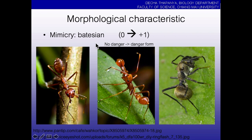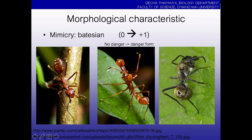For example, everybody knows ants are fierce animals — if you touch one, it can bite you. The second picture is a spider, but its shape looks like the fearful ant. There are also other kinds of spiders that look like ants. So two spiders mimic the ants — that is Batesian mimicry.